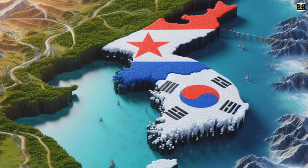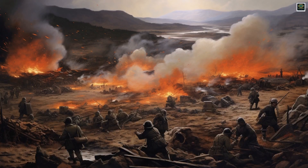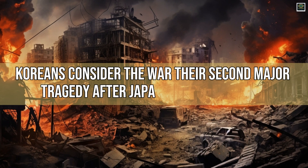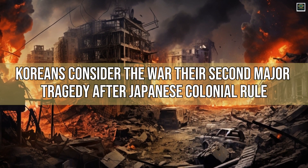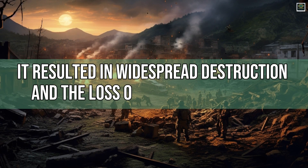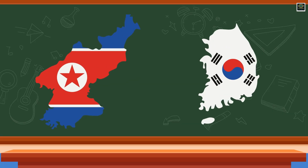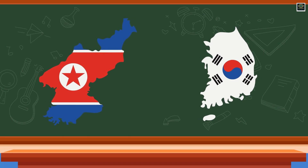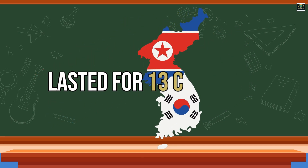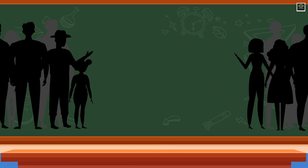However, the war and its resolution didn't reduce the Cold War tensions of that time. Since then, Koreans consider the war their second major tragedy after Japanese colonial rule. It resulted in widespread destruction and the loss of three million lives. Additionally, it solidified the division of a once-unified society that had lasted for 13 centuries, permanently separating millions of families.